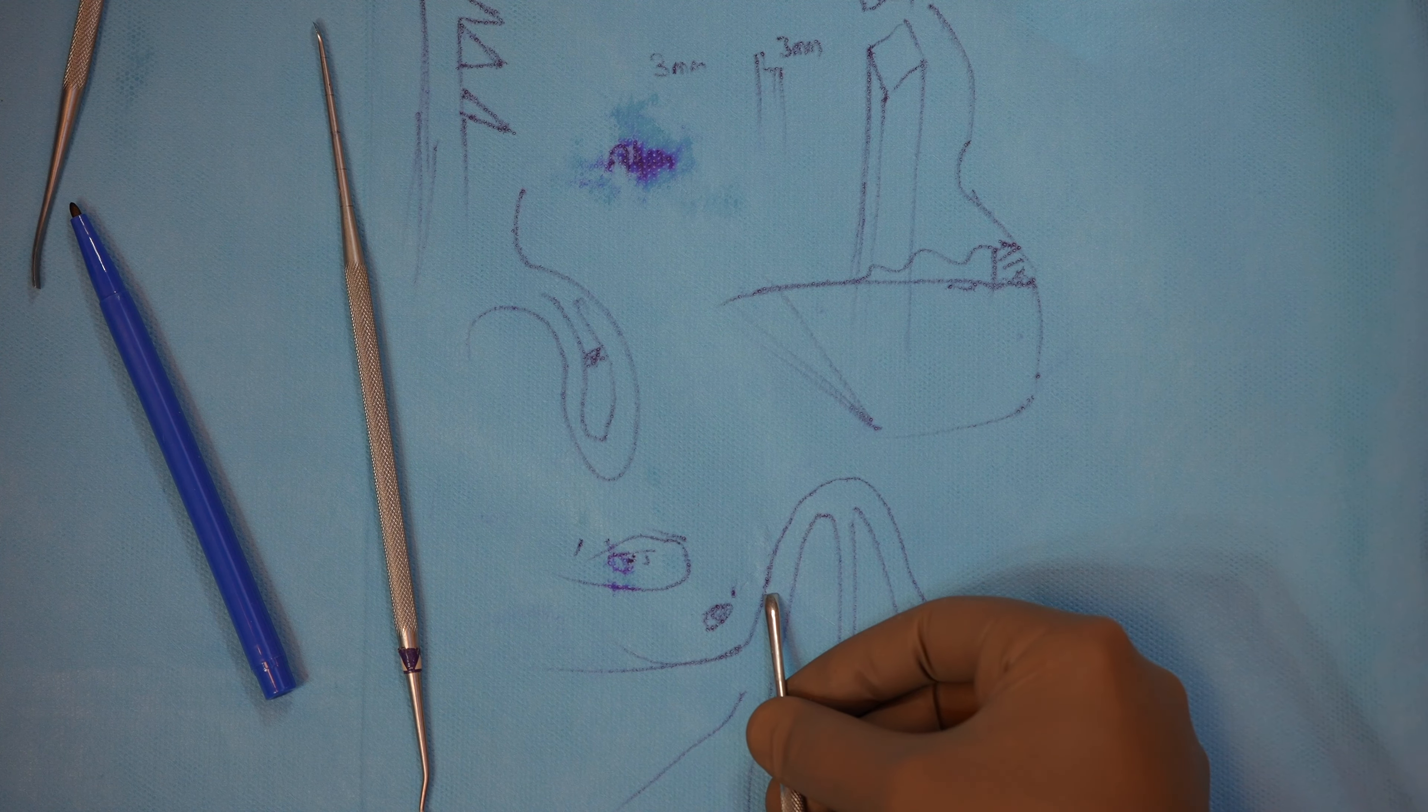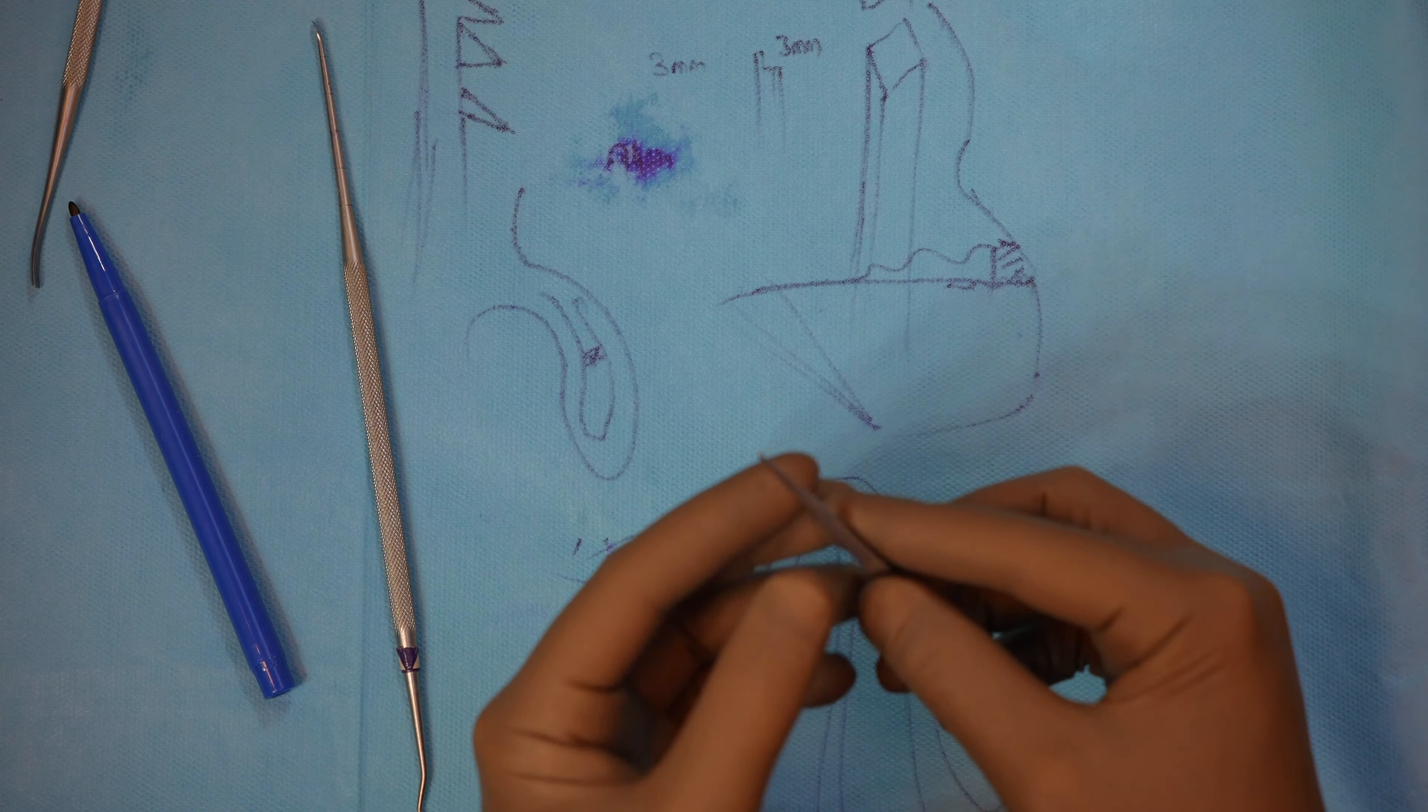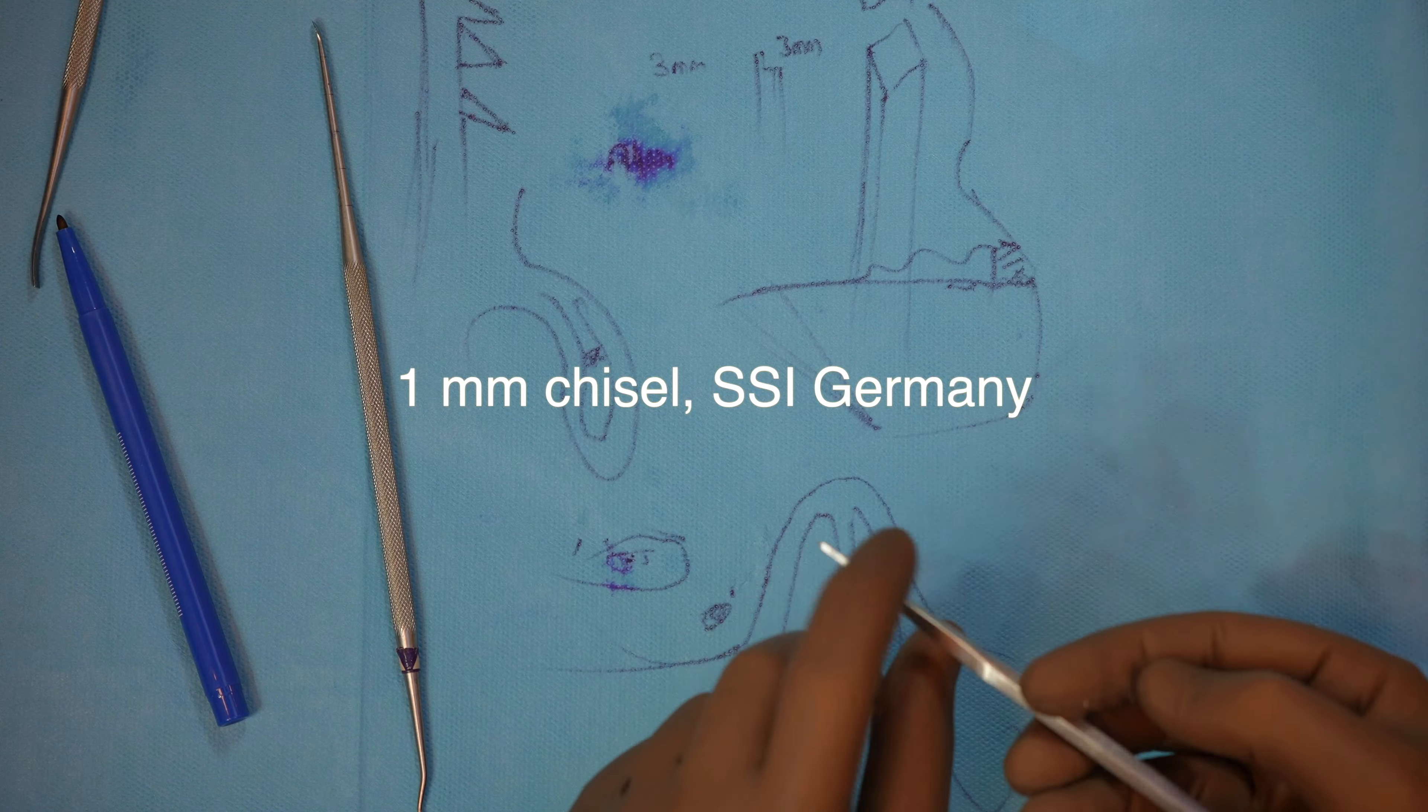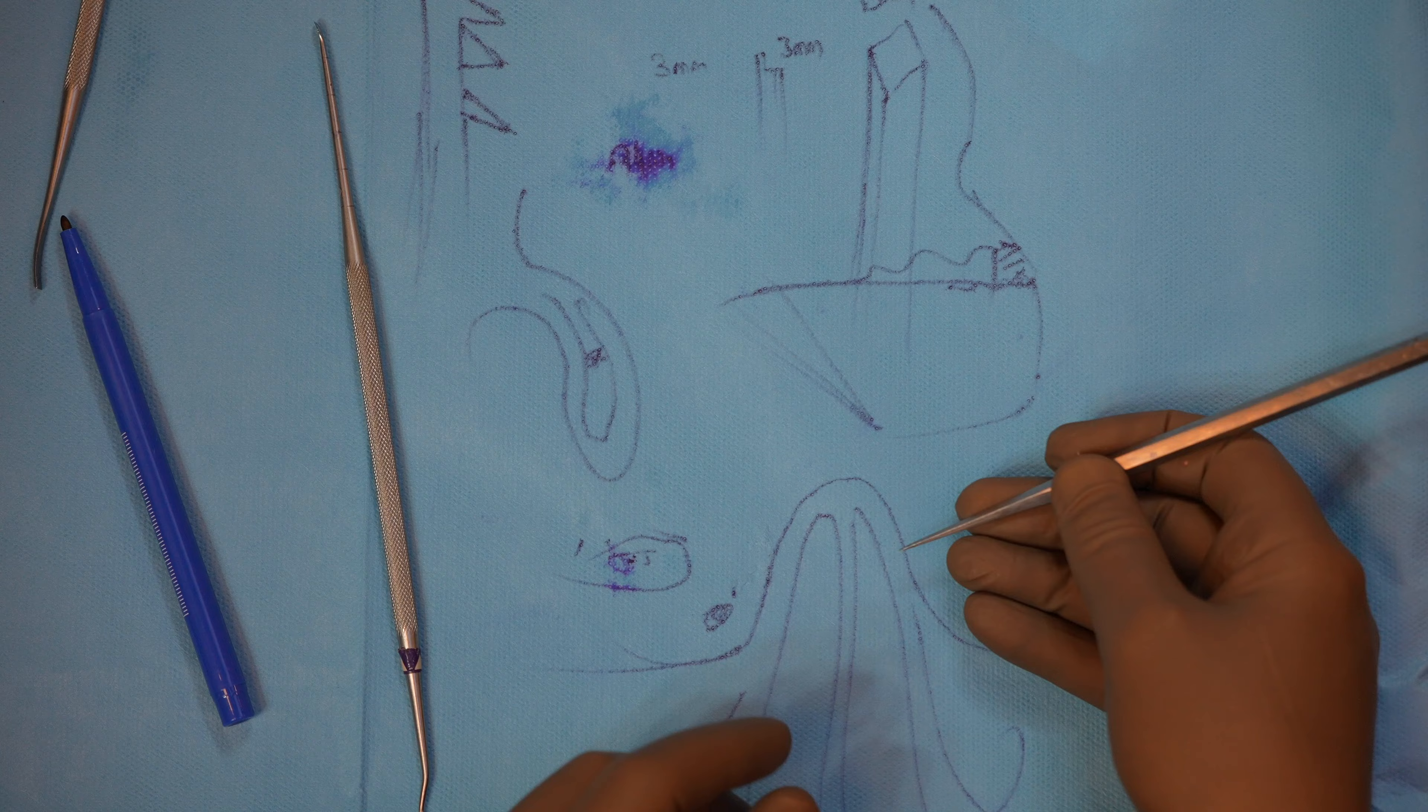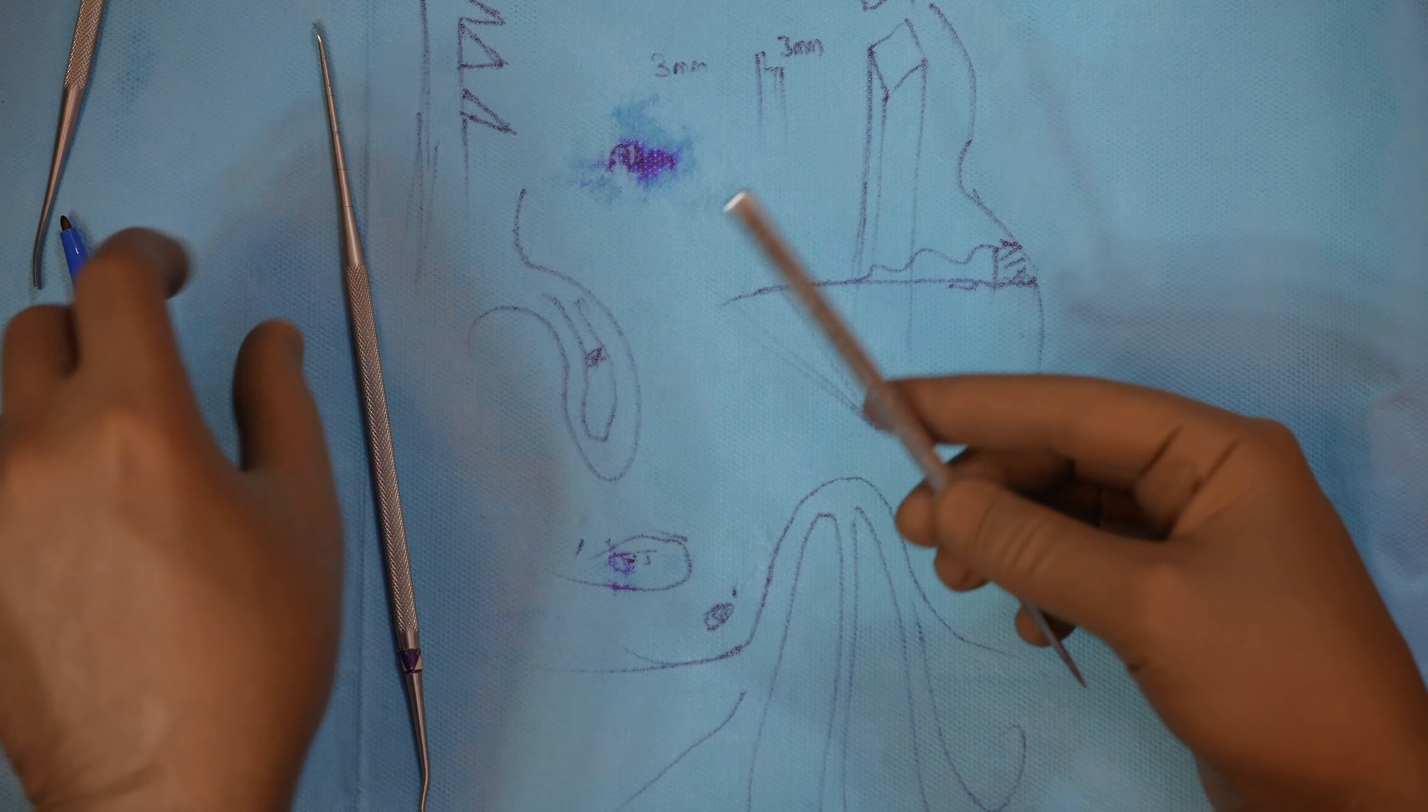We designed straight periosteal elevator to preserve that vessel. Another instrument is that 1mm chisel. Most of my friends are not aware about that. So 1mm chisel can do transverse osteotomy through a needle hole. So we don't see any scar and it doesn't need any suturing.